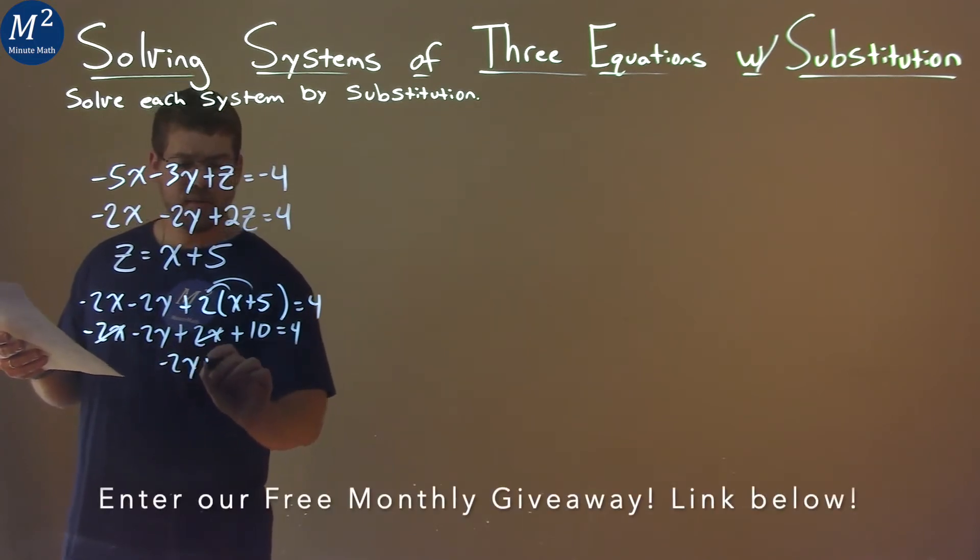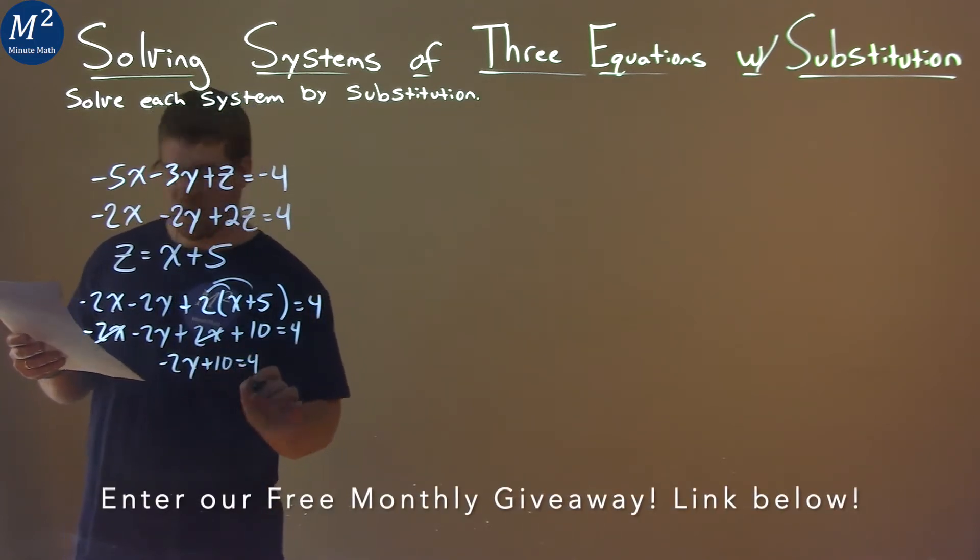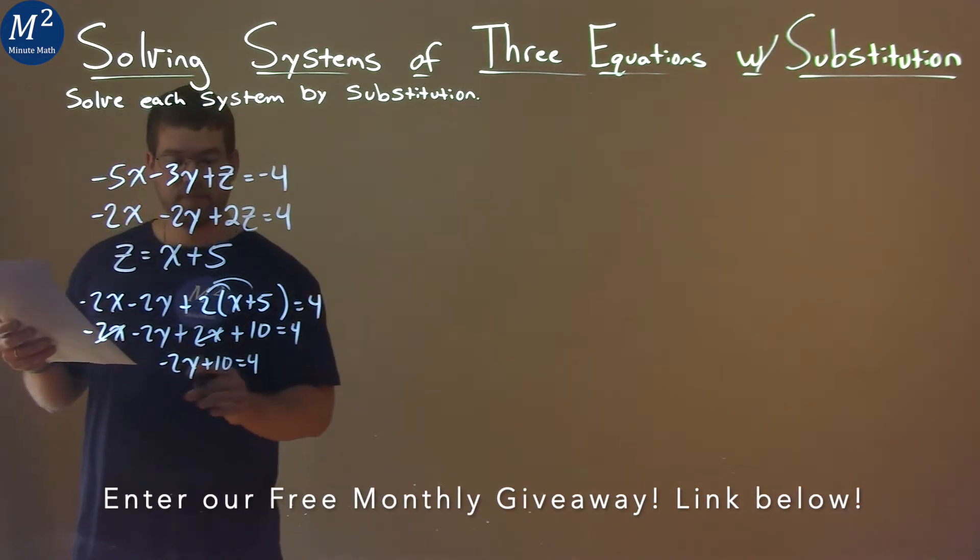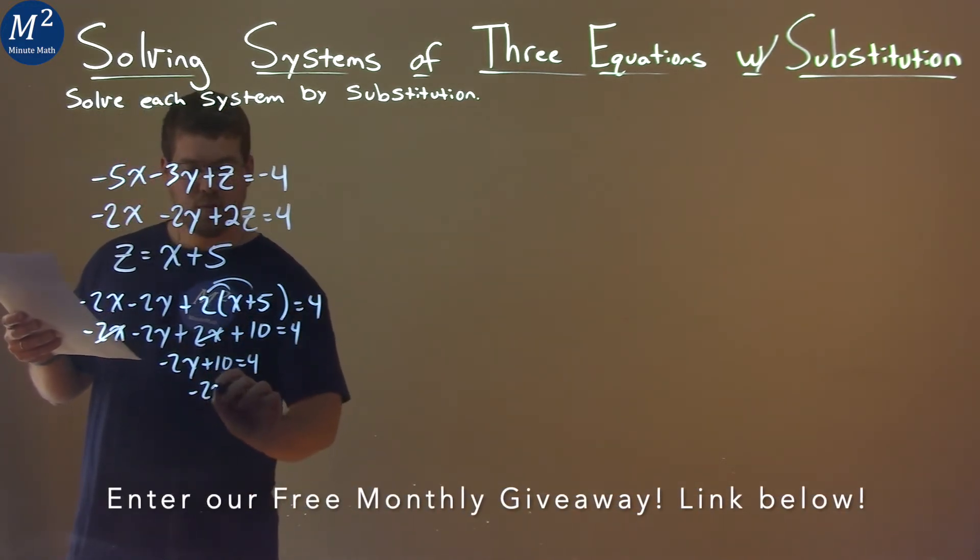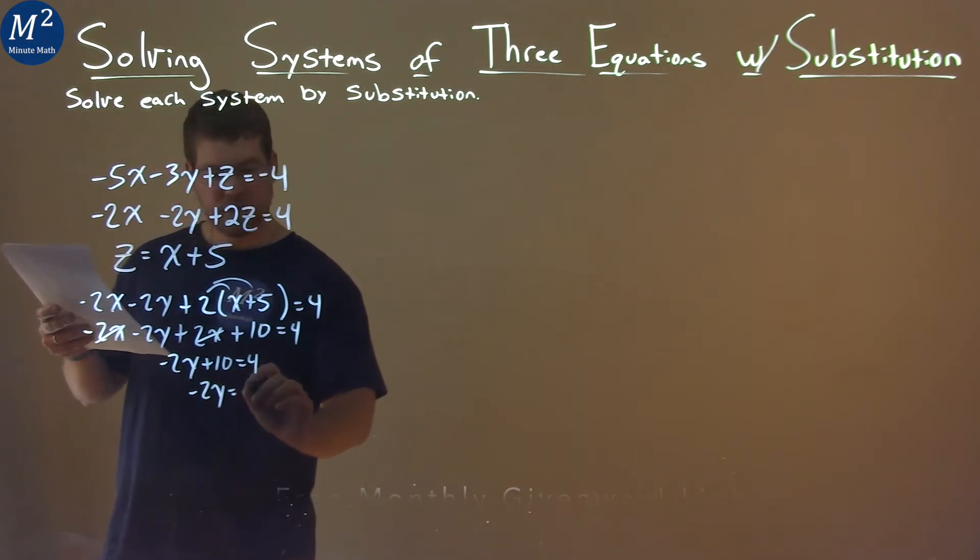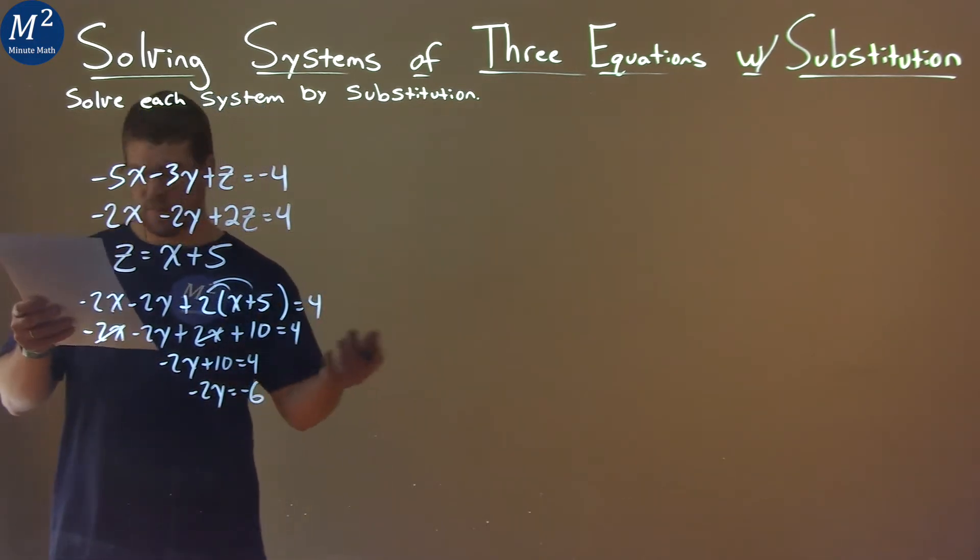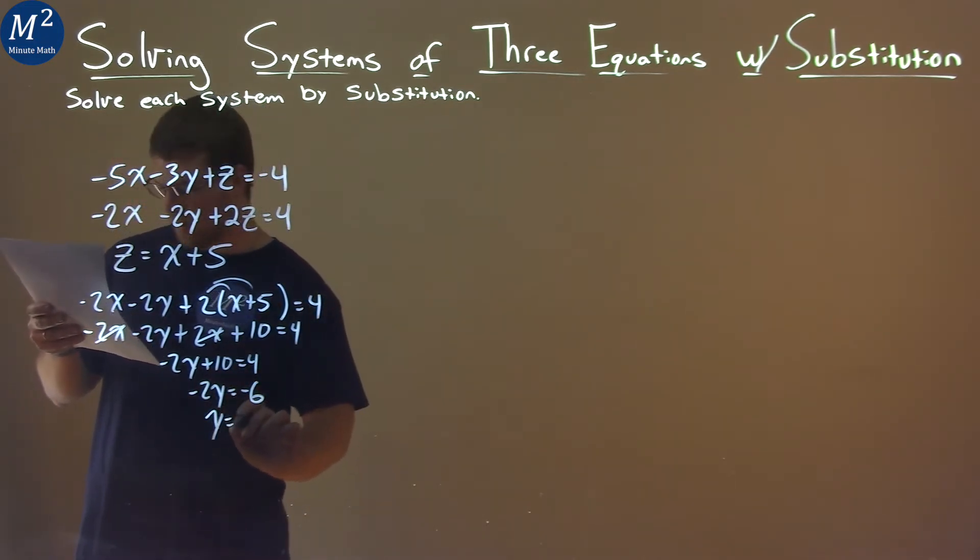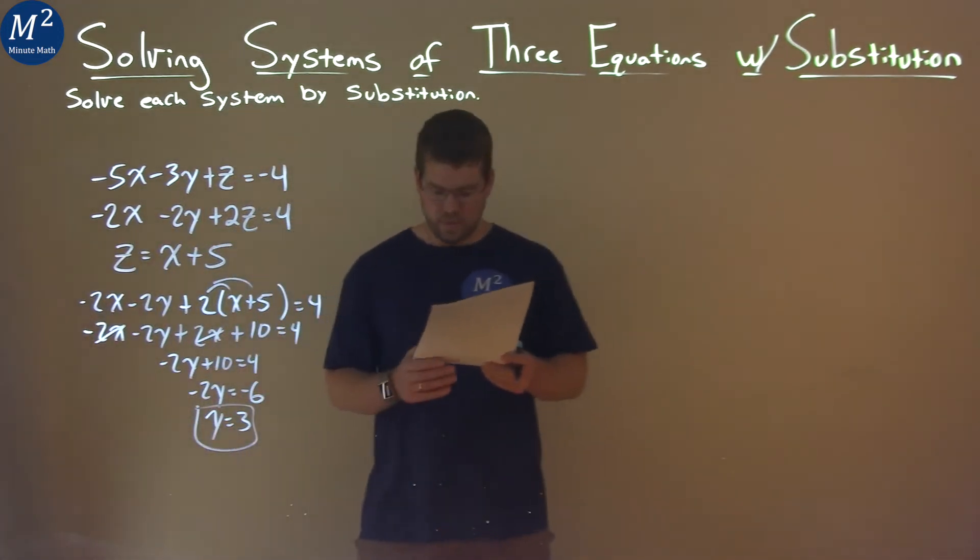So we just have negative 2y here, plus 10, equals 4, and we actually can get y by itself now. Subtract the 10 to both sides, and we have negative 2y equals negative 6. Divide both sides by negative 2, and y equals a positive 3.